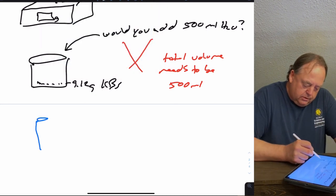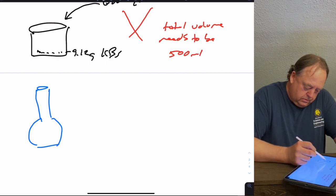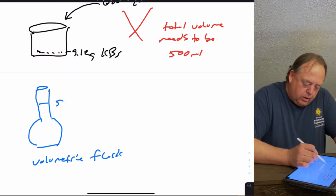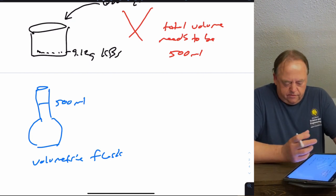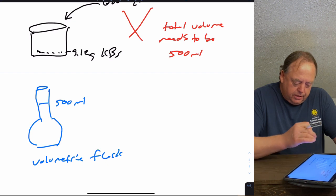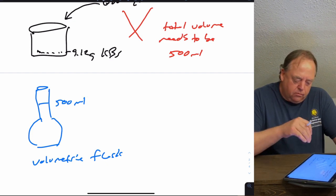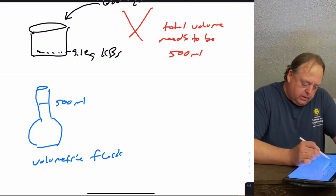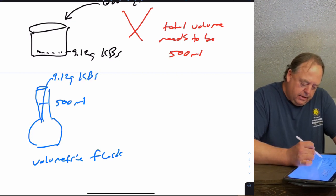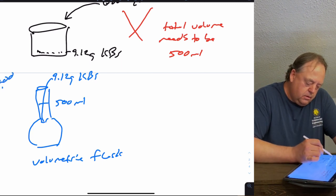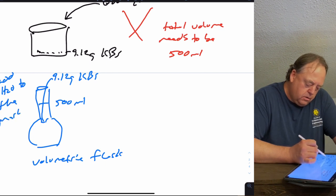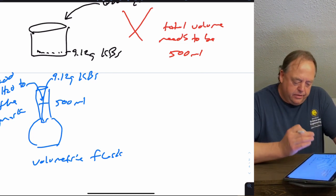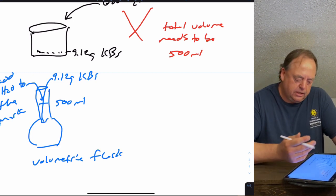Instead, you would use a volumetric flask, which has a precise mark for exactly 500 mL — machined so the volume is very accurate. You add the 9.12 grams of KBr into the flask, then add H₂O to the mark. Once your volume hits 500 mL, stop adding water, and now you have a 0.153 molar solution of KBr.